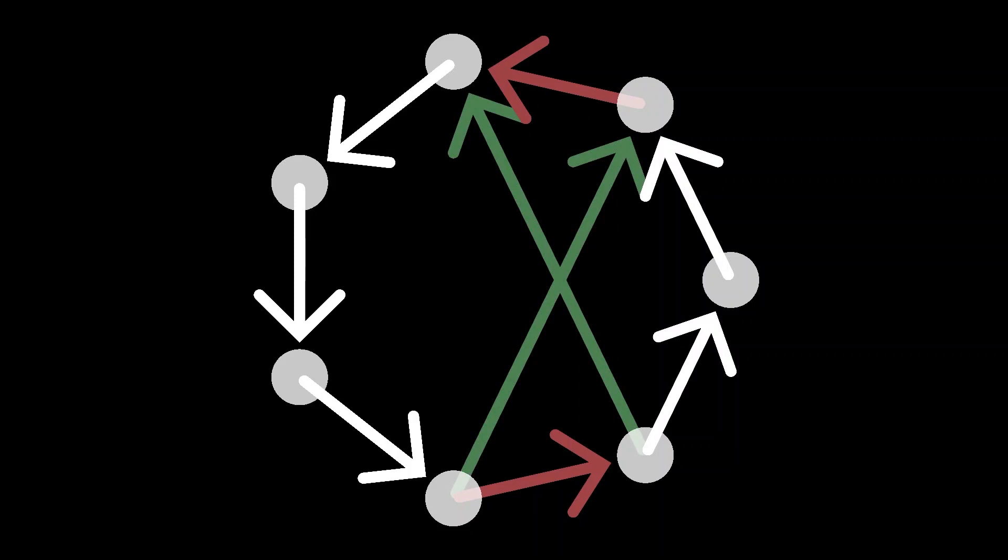You can notice that green edges also form a tour with the white ones if we reverse these edges. And the difference between red and green tour is exactly the difference between red and green edges.